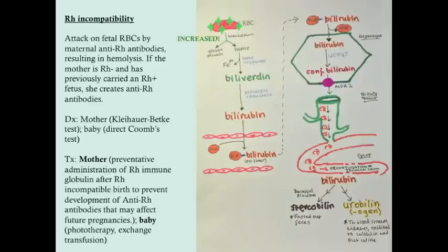RH incompatibility — we'll go into more detail in the indirect hyperbilirubinemia section — is an attack on fetal red blood cells by maternal anti-RH antibodies, typically anti-D antibodies, which is the major antibody that causes problems with RH incompatibility. There are some minor ones, but for the USMLE, be aware of the anti-D — that's usually what they're referring to.